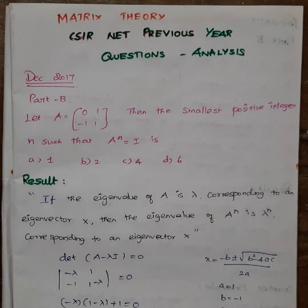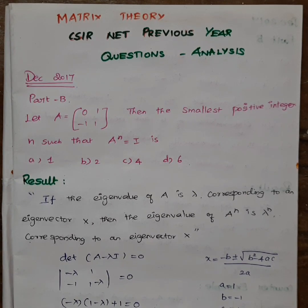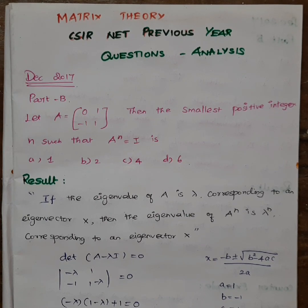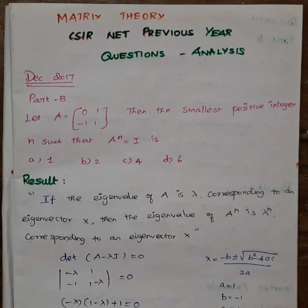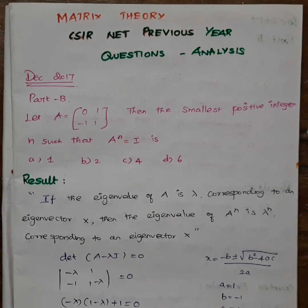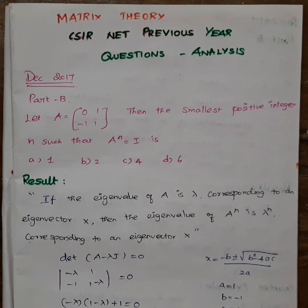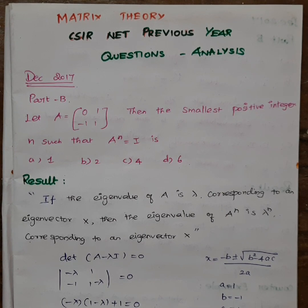If we ask a question about the matrix theory, there is a matrix condition and we will consider other variables. What relation gives A^n equal to I? If A^n equals I, then we will see any other relation. Now let's look at the types of matrix.